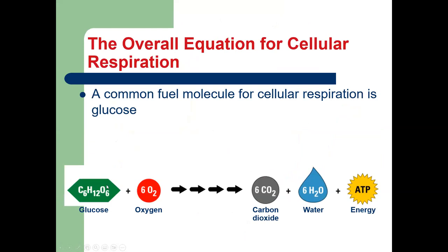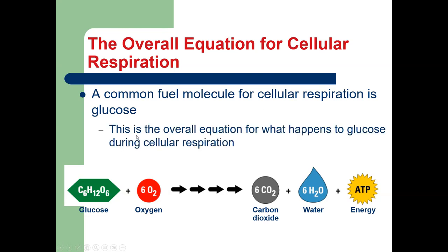You need to memorize this equation: glucose plus oxygen turns into carbon dioxide, water, and ATP energy. A common fuel molecule for cellular respiration is glucose, though other food molecules can go through this process too. This is the overall equation for what happens to glucose during cellular respiration. There are coefficients — a six in front of oxygen, carbon dioxide, and water — that balance the equation, but you don't need to worry about them.